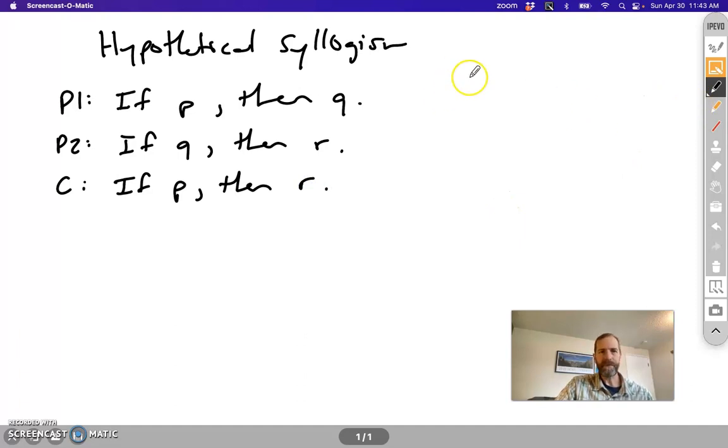Why is that? Well, this one actually, it's kind of visually obvious in a way. P implies Q. Q implies R. And the conclusion just cuts out the middle term here. It says that P implies R.